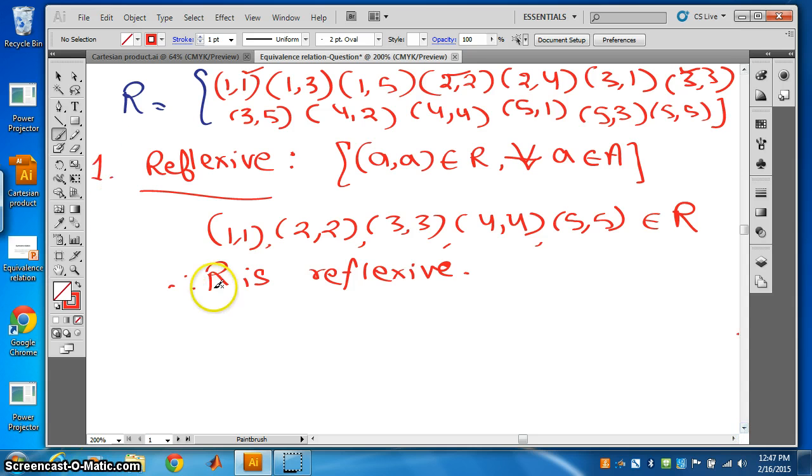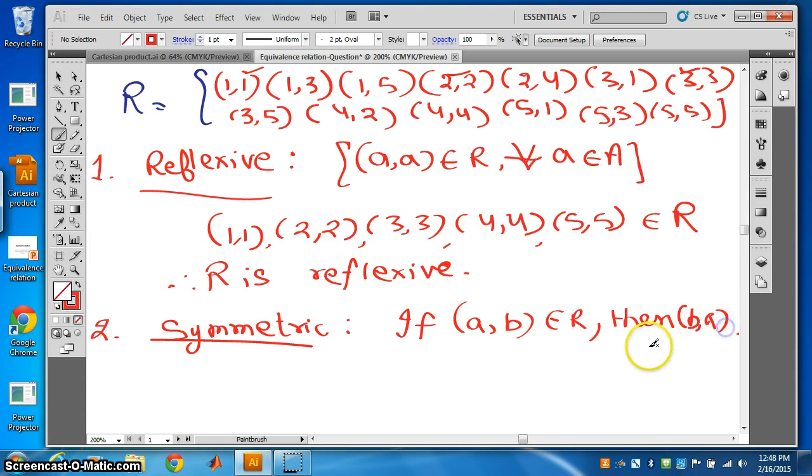What is the next property? Symmetric. What is symmetric property? If (a,b) belongs to R, then (b,a) should also belong to R. So we have to look for all pairs (a,b), where b is different from a.